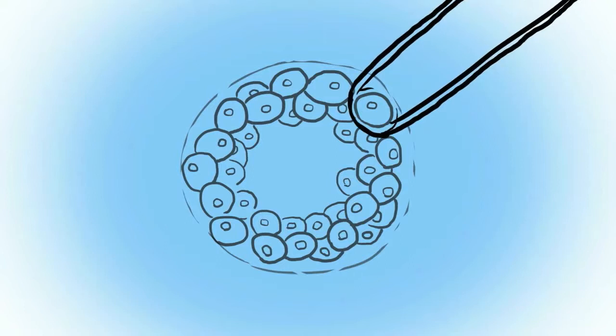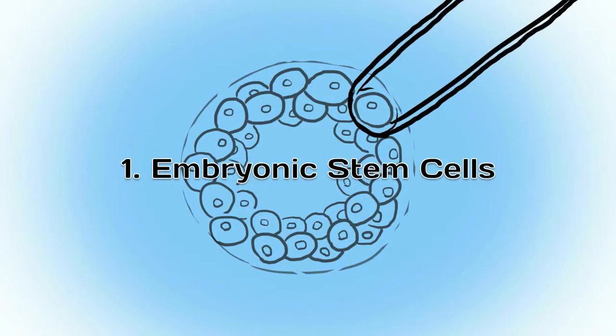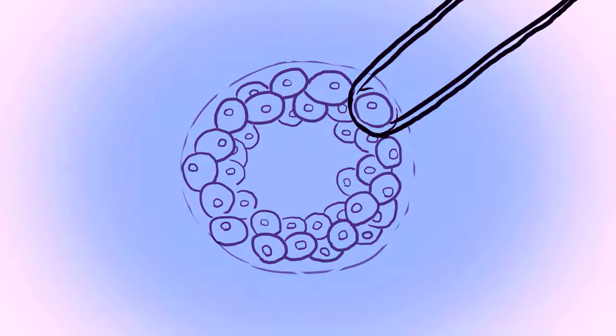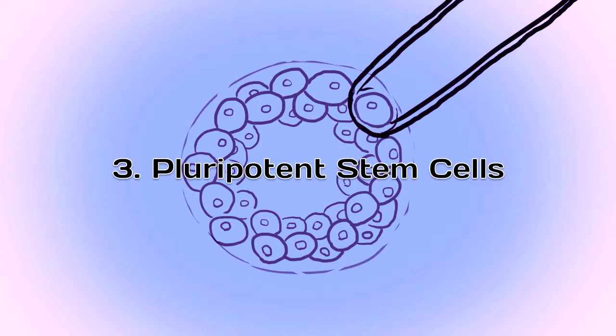There are three types of stem cells. Embryonic stem cells from early stage human embryos, adult stem cells derived from our body cells including the baby's cord blood, and pluripotent cells generated in the laboratory from our body cells to behave in a similar way to human embryonic stem cells.